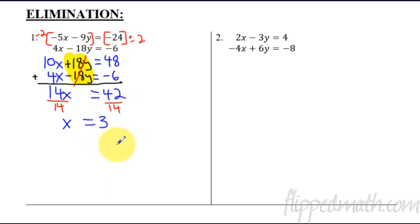This and this will cancel. And I end up with a 14x. This is gone, so it's just zero. So I'll just say equals 42. Now I can divide both sides by 14. And we get that x equals 14 goes into 42 evenly. It goes in three times. So now we know the x.